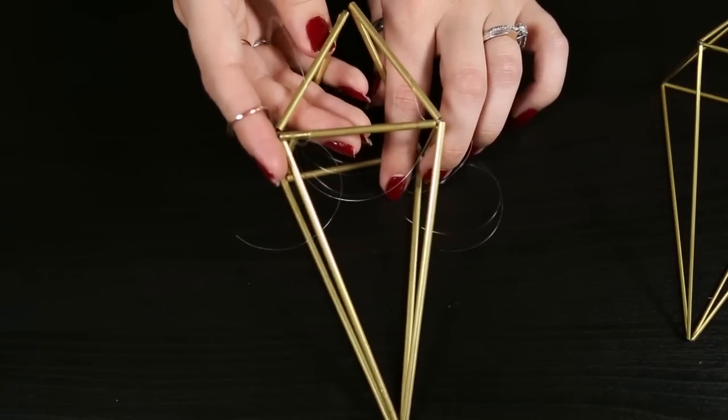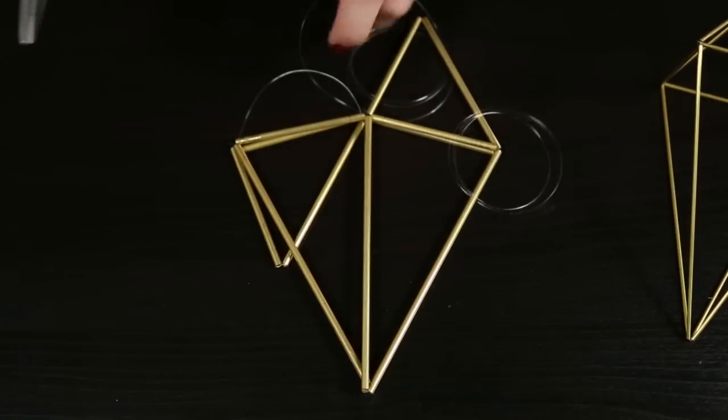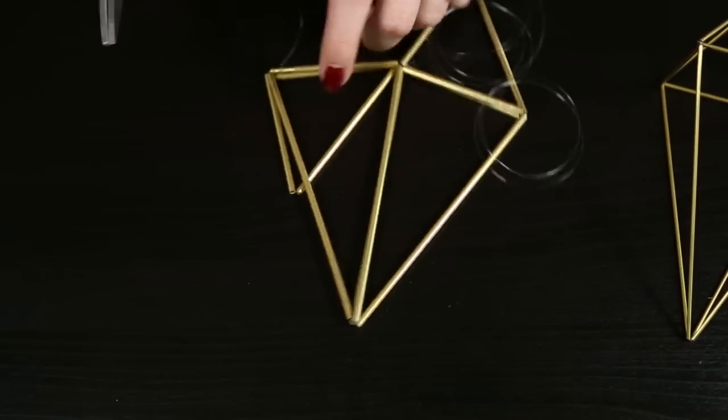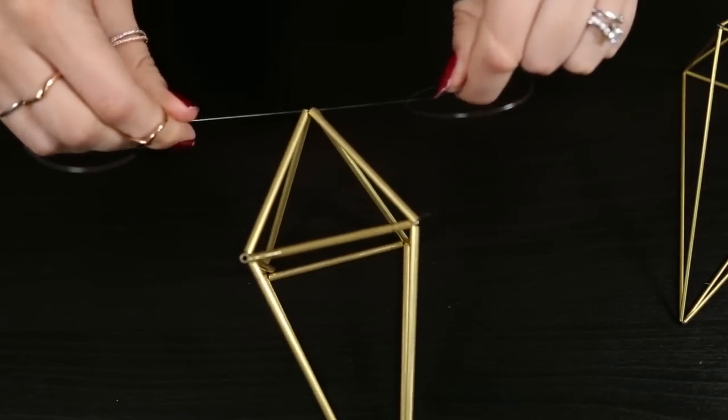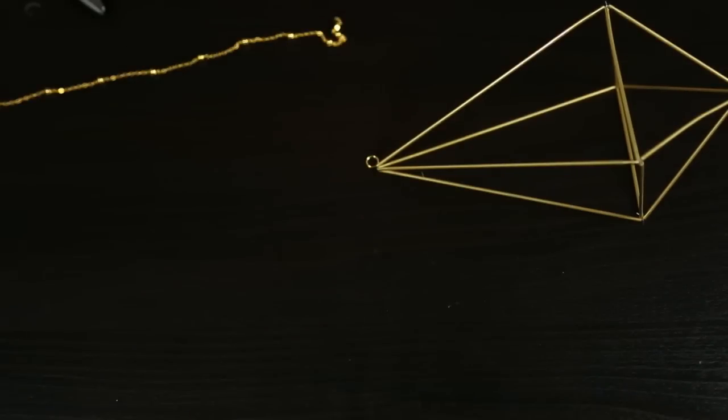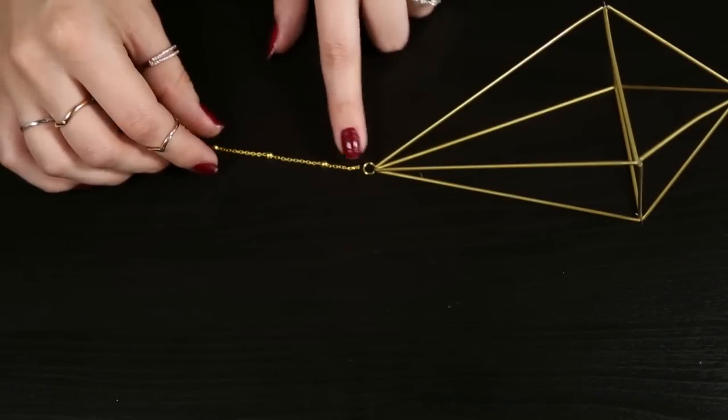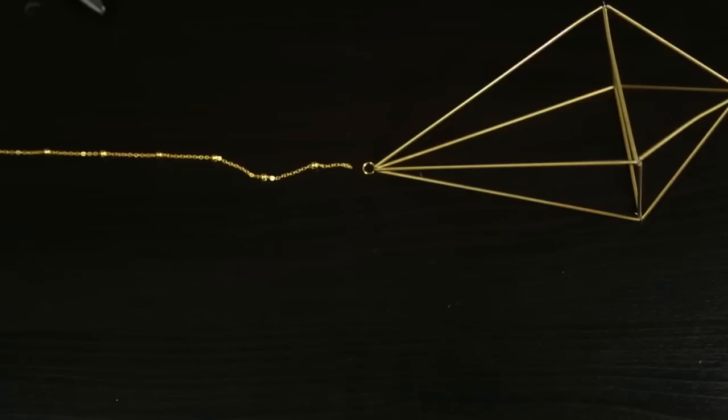You should have two triangles that you can bend towards each other and you're going to connect them. So I'm just cutting off the excess string grabbing a fresh string and tying these guys off in a knot. If you want this to hang add a jump ring along with some chain to the top of the shape and now you have a geometric hanging himeli.